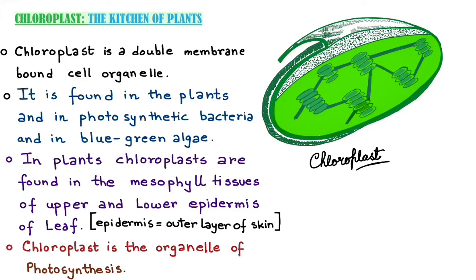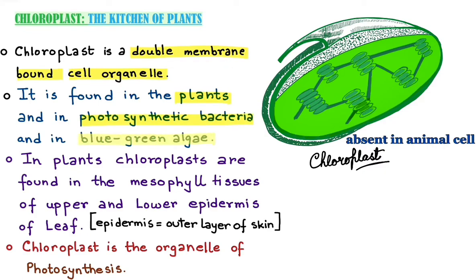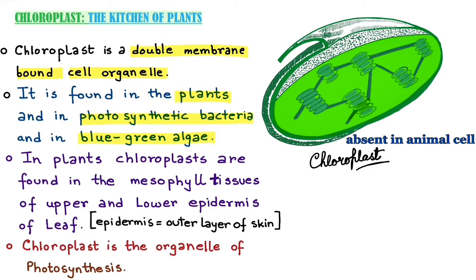Chloroplast is a cell organelle — a double membrane bound cell organelle. We cannot find chloroplast in animal cells. It is exclusively found in plants and in some photosynthetic bacteria and blue-green algae.